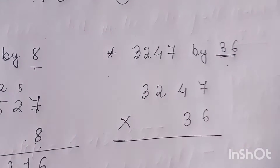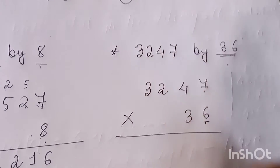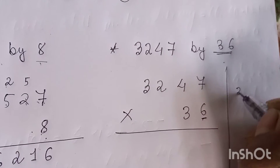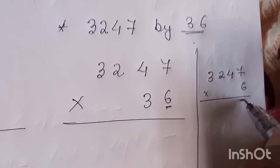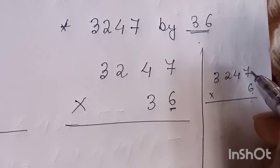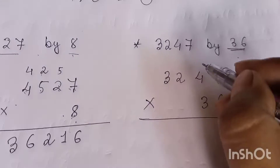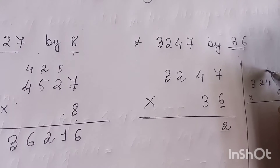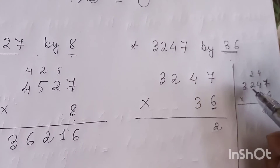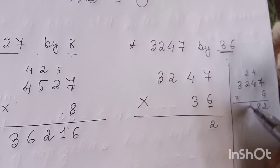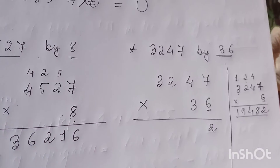We start from the digit on the right. First multiply this big number by six. Seven sixes are forty-two — write two, carry four. Four sixes are twenty-four, plus four, twenty-eight — write eight, carry two. Two sixes are twelve, plus two, fourteen — write four, carry one. Three sixes are eighteen, plus one, nineteen.